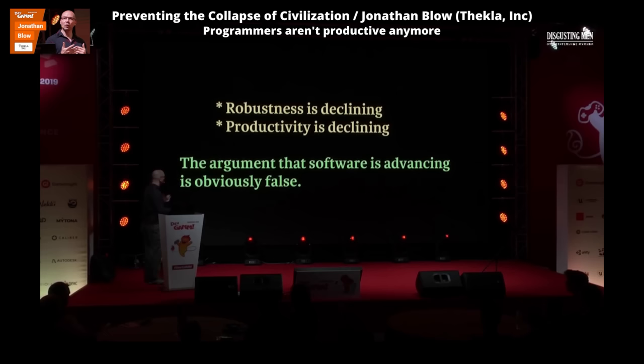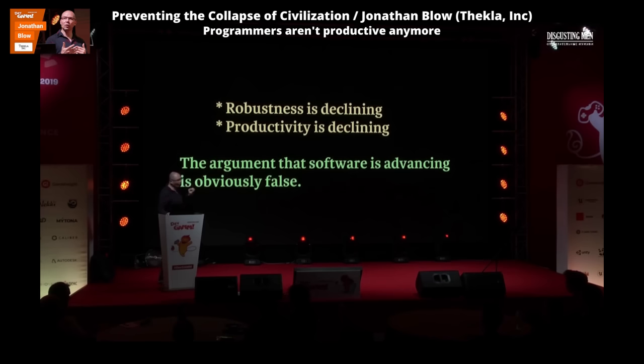So I've made a case that robustness of software is declining. Productivity of programmers is declining. So if you're going to say that the actual technology of software is somehow advancing, it seems contrary to those two facts. I think the argument that software is advancing is clearly false, except maybe in tiny local bubble-like areas.